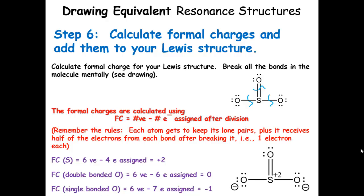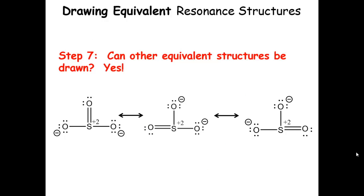All the formal charges have to add to the overall charge on the molecule. Sulfur trioxide does not have a charge, so these formal charges should add to zero. Negative one plus negative one is negative two, plus two gives us zero, so we're in good shape. Can other equivalent structures be drawn? Of course. We chose to put the double bond here, but there's no reason why it couldn't be here or here.